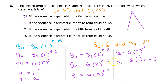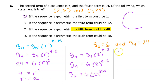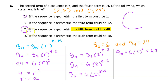While we are in geometric mode, let's check option C — whether the fifth term could be 48. G5 equals 6 times 2 to the (5 minus 2) power, which is 6 times 2 to the 3rd power. 2 cubed is 8, and 6 times 8 is 48. So the answer is C.